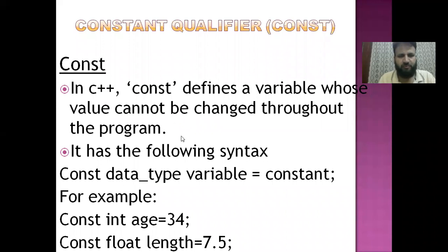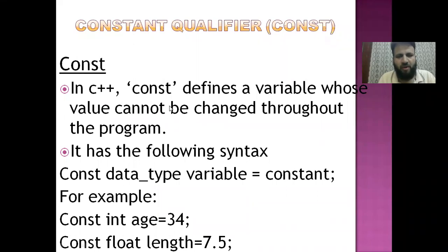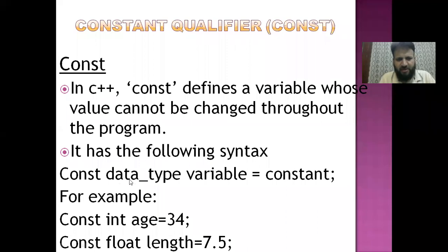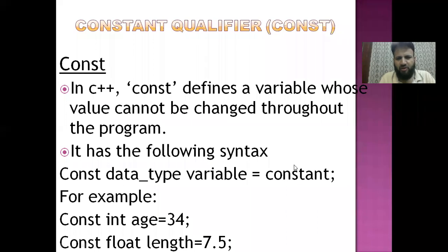In C++, a constant defines a variable — a variable whose value cannot be changed. It has the following syntax: first, the const keyword; then we mention the data type — integer or float; then the variable name; and finally we give it a constant value. Throughout the whole program, the value remains the same as we have mentioned.